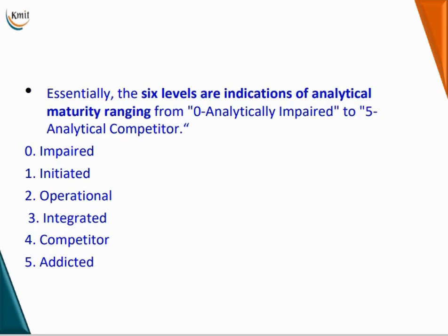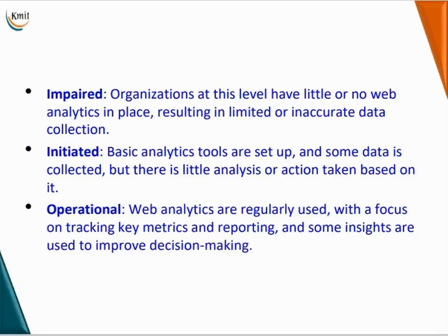The six levels are an indication of analytical maturity ranging from 0 (analytically impaired) to 5 (analytical competitor). Level 0, impaired: organizations at this level have little or no web analytics in place, resulting in limited or inaccurate data collection. Level 1, initiated: basic analytic tools are set up and some data is collected, but there is little analysis or action taken based on it.